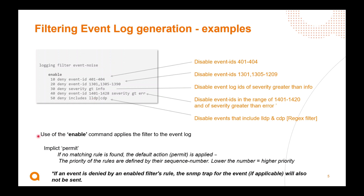Remember, the use of the 'enable' keyword applies the filter to the event log — without that it doesn't get applied, so you must have that in if you want to apply it to the event log. The implicit permit means that if no matching rule is found, the default action is permit — just like many access lists. The priority of the rules is defined by their sequence number: the lower the number, the higher the priority. Also be aware that if an event is denied by an enabled filter's rule and there's an SNMP trap for that event, it will not be sent.